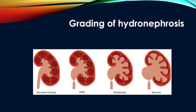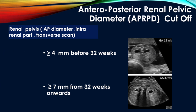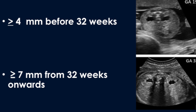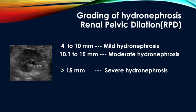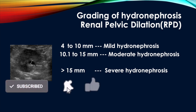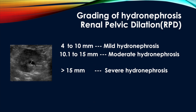Grading of hydronephrosis is important as it is a prognostic sonographic finding; accordingly we can plan antenatal follow-up to see if the pathology is worsening or regressing, and it helps for proper parental counseling and planning antenatal and postnatal therapies. Hydronephrosis used to be graded subjectively as mild, moderate, and severe, but subjective evaluation is always confusing. Hence anteroposterior renal pelvic diameter (RPD) measurement is used. The RPD is measured in the transverse or axial section with the spine at 12 or 6 o'clock. An RPD ≥4 mm before 32 weeks and ≥7 mm from 32 weeks onward is considered pathological. RPD 4–10 mm is mild, 10.1–15 mm is moderate, and >15 mm is severe hydronephrosis. However, RPD-based grading tells nothing about renal parenchyma or calyceal dilatation.